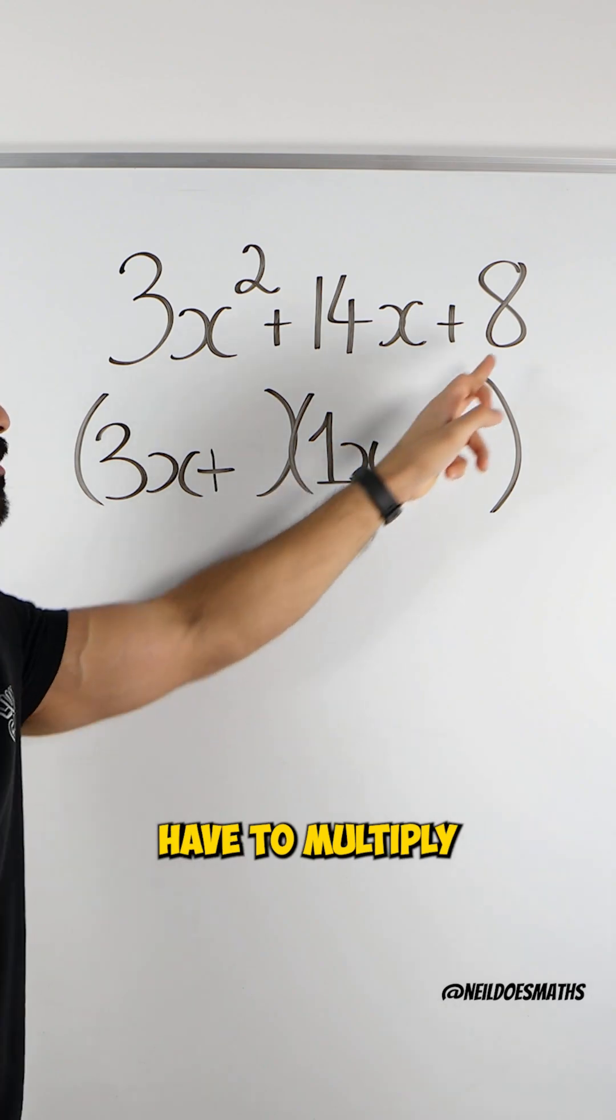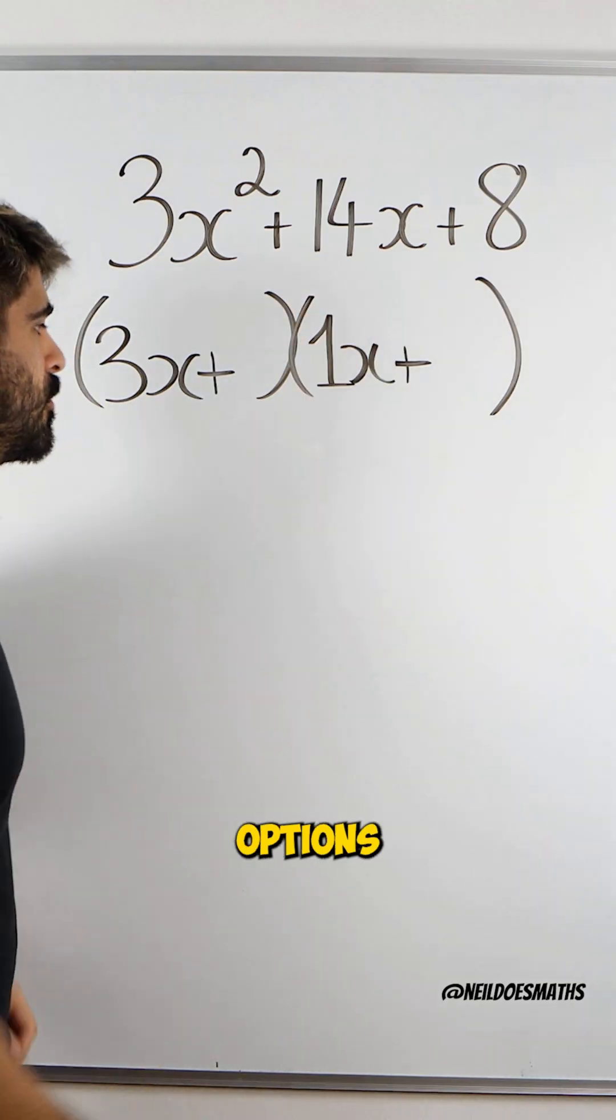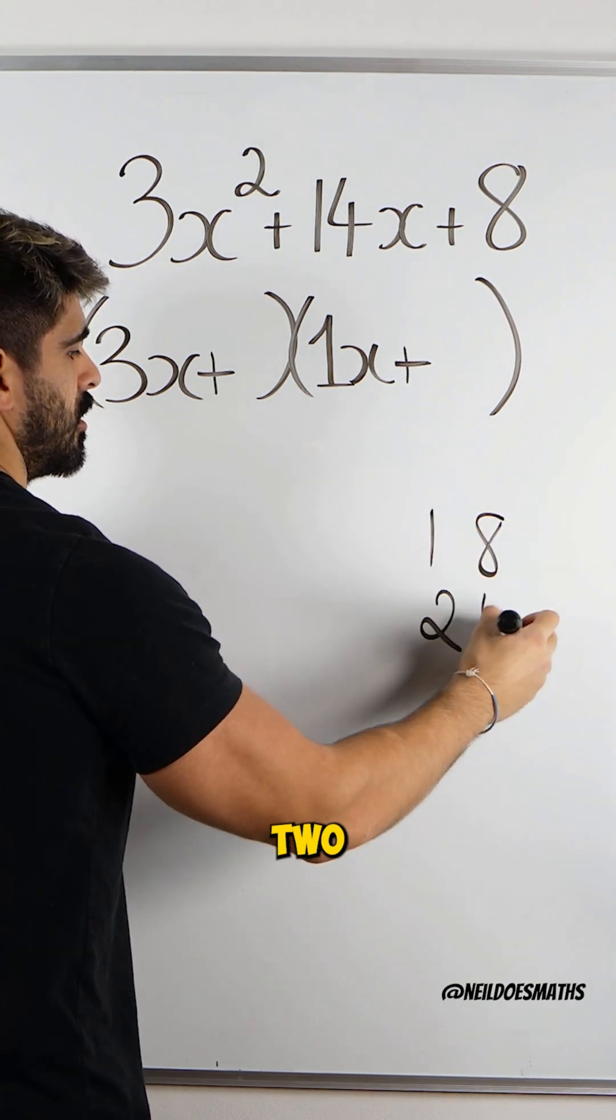Now, these two numbers have to multiply to give me 8. What are my options? 1, 8, 2, 4.